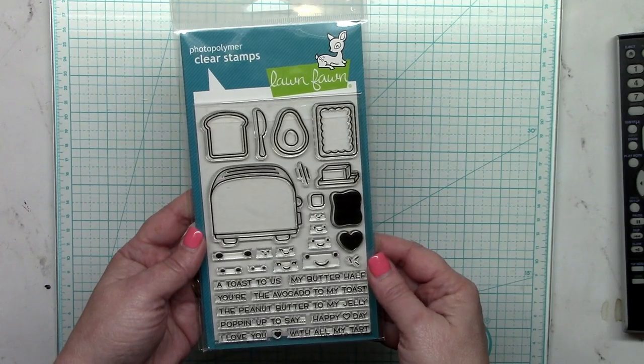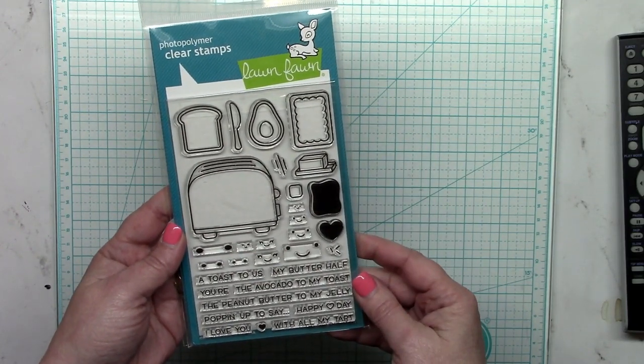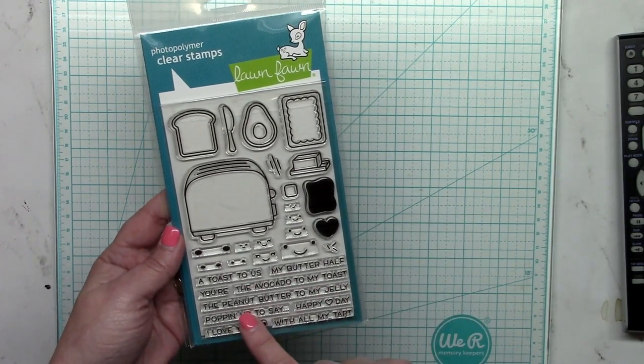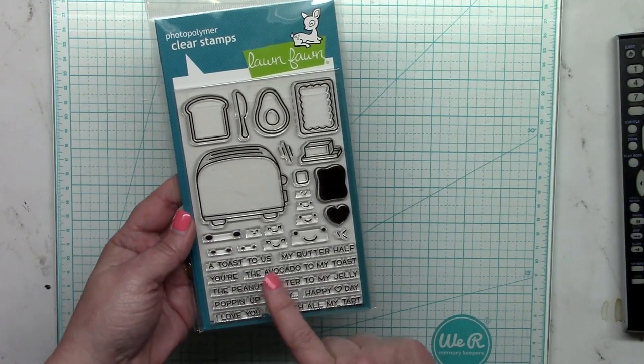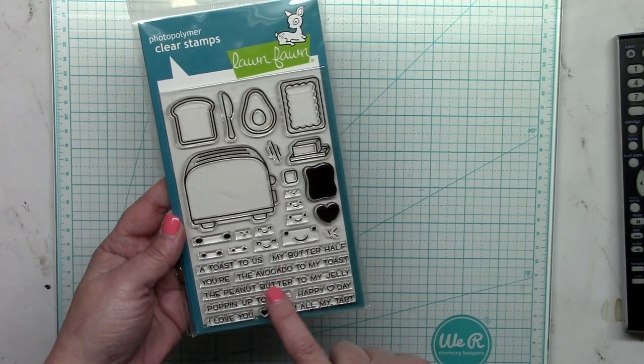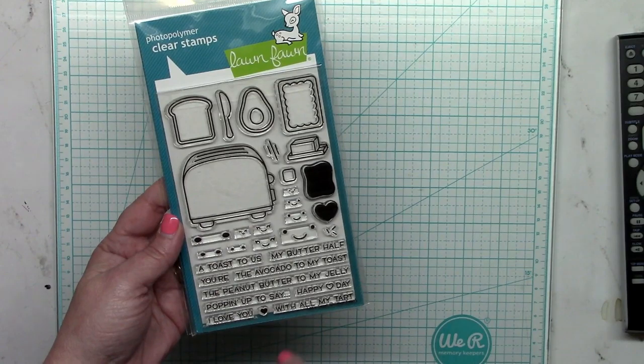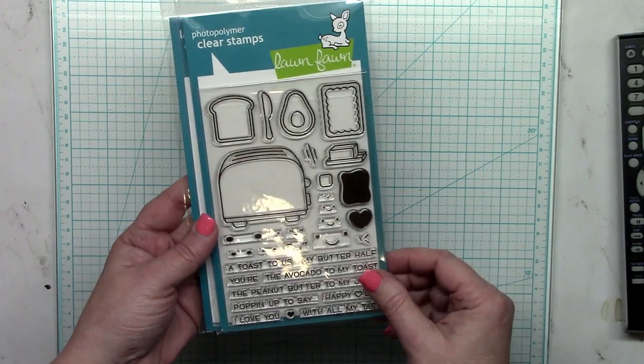So here is the stamp set from Lawn Fawn called Let's Toast and it's got so many cute images as well as lots of sentiments that are adorable like the avocado to my toast, the peanut butter to my jelly, I love you with all my tart. So cute.